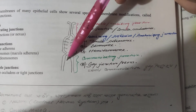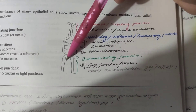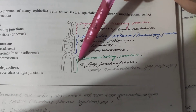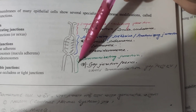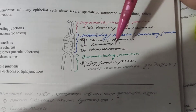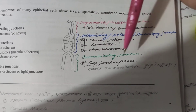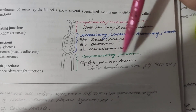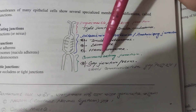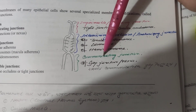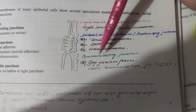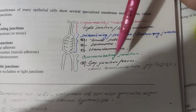And the communicating junction — you can see that it easily communicates. So, there is gap junction, or nexus. Gap junction or nexus is the communicating junction.